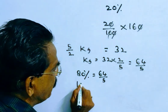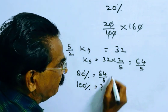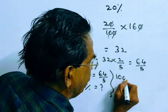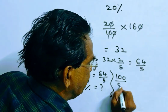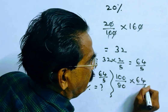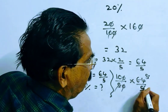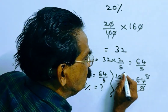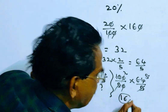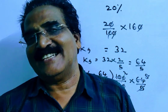100/80 × 64/5 — cancelling, we get 16 rupees. So 16 rupees is the original price of the sugar per kg. Thank you, have a nice day.